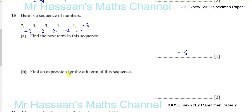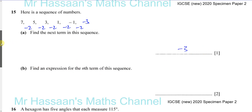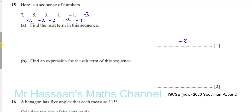Then it says, find an expression for the nth term of the sequence. Now to find the nth term of a sequence, you need to think about how it's changing. Now if it's changing with a constant amount each time, then any number that changes by a constant amount each time has got something to do with the times table of that number.